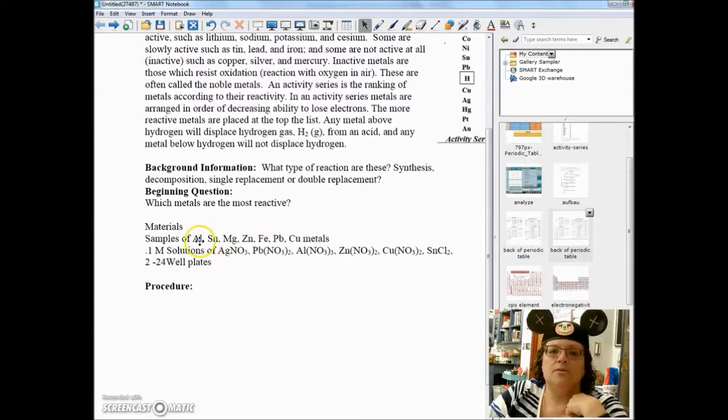All right. You're going to have samples of aluminum, tin, magnesium, zinc, iron, lead, and copper. One, two, three, four, five, six, seven samples.